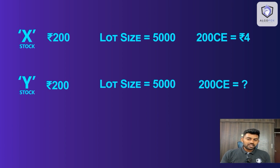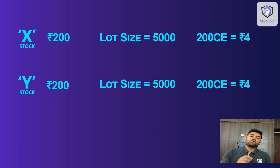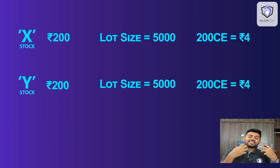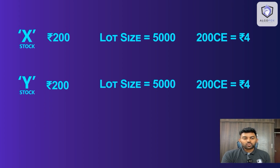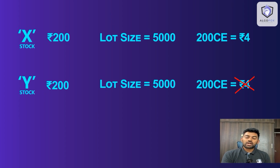So your answer might be 4 rupees. And if your answer is 4 rupees, this is where the need for option Greeks comes into picture. The value of option premiums of multiple strikes of two different stocks with similar price and similar lot size will never be the same. That means the value of 200 call of Y need not be 4 rupees — it can be much above or much below 4 rupees. There are multiple factors affecting the option price. Let us look at them one by one.